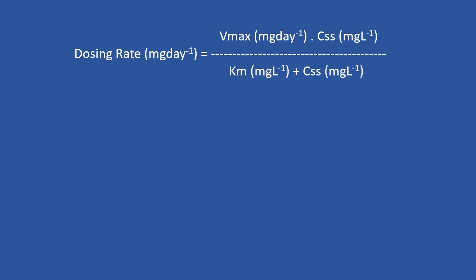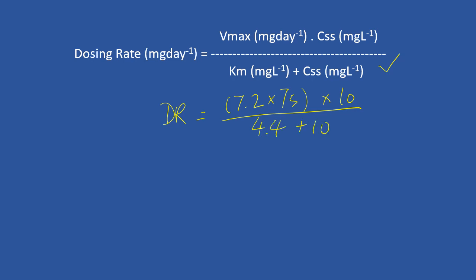To calculate the dosing rate you need to remember this equation. In this case the Vmax is given per kg, so you have to take into consideration the body weight of the patient. Dosing rate equals 7.2 multiplied by the body weight, multiplied by the target concentration of 10, divided by 4.4 (which is Km) plus 10. Solving this equation, your answer will be 375 mg.